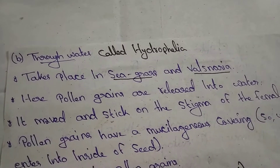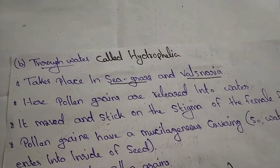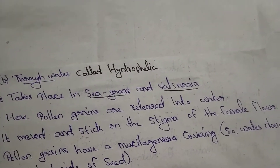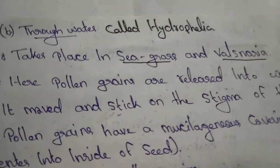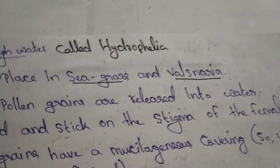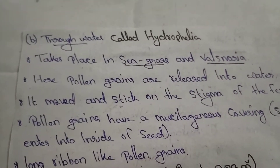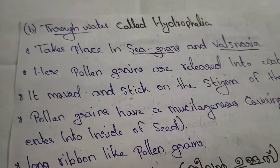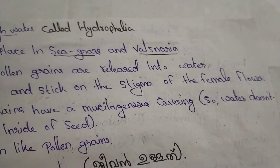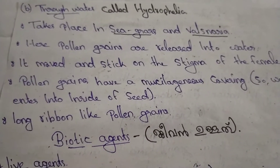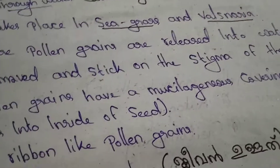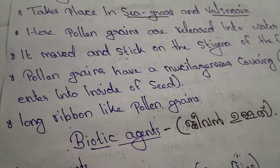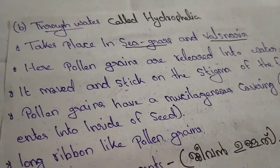Here, pollen grains are released into water and move to stick on the stigma of the female flower. Pollen grains have a mucilaginous covering so that water does not enter inside.